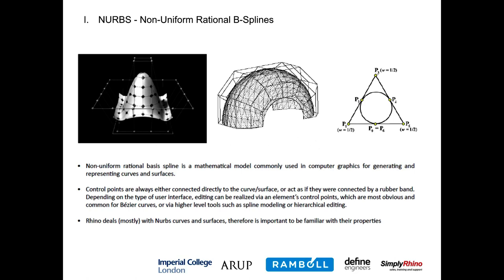One important NURBS property is that curves and surfaces have control points. The surface is not defined by points on the surface itself, but by points that exert forces of attraction onto the surface you are modelling. Depending on the degree of the curve or surface, they have more or less power of attraction, giving you smoother or more relaxed surfaces. A degree-one curve is actually a polyline going through points with kinks at every connection. If you increase the degree, the control points get farther from the curve itself, which becomes much smoother.